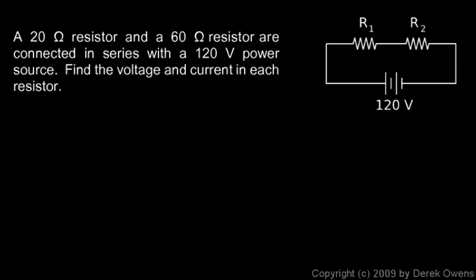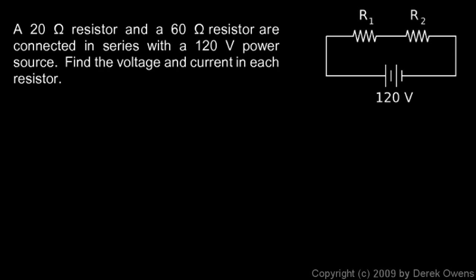Okay, our third example here. We're told we have a 20 ohm and a 60 ohm resistor connected in series with a 120 volt power source. So we'll call R1 there the 20 ohm resistor and R2 the 60 ohm resistor. And then 120 volts there, that's the total voltage. We're told to find the voltage and current in each resistor. Well what we can find first is the total resistance R. That's just going to be 20 plus 60, which adds up to 80 ohms.